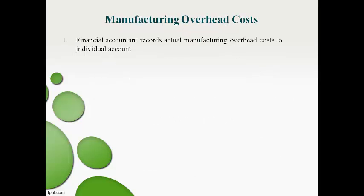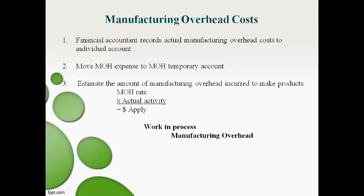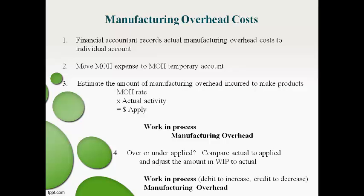Manufacturing overhead takes four steps to record. First, the financial accountant records actual manufacturing overhead expenses to the individual accounts, such as rent expense, manager salaries, utilities expense, etc. Second, the managerial or cost accountant makes adjusting entries to move all manufacturing overhead expenses to a temporary holding account. Third, the estimated cost to make all products is moved to the work in process account using the estimated overhead rate. Fourth, the estimated amount moved to work in process is adjusted to equal the amount actually incurred during the period.